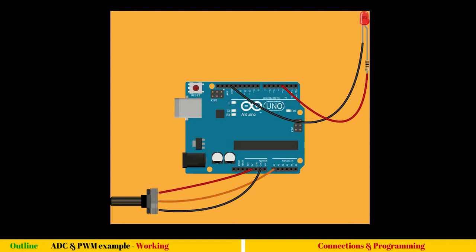The potentiometer is 10 kilo ohm from end to end. When we connect end to end to 5 volts and ground — you can interchange these probes, it doesn't matter — the end to end voltage will be 5 volts. While changing the knob, the center point connected to the knob will change the resistance, and you get a different resistance at every turn. From end to end you get 5 volts.